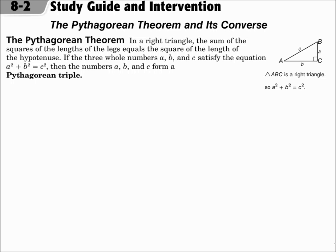If those three numbers are whole numbers, then it's a Pythagorean triple. So no matter what, a squared plus b squared equals c squared works with a right triangle. Sometimes those numbers are decimals or fractions, but if they're all whole numbers, then it's a Pythagorean triple.